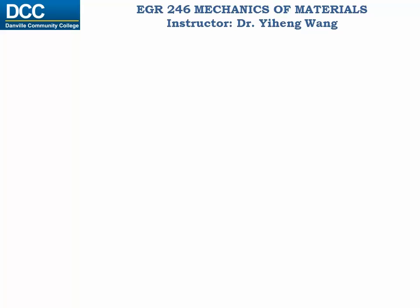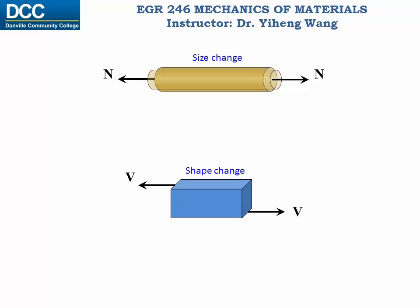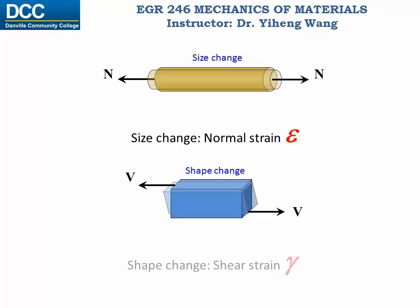As mentioned in the introduction to this course, deformation of a member can be characterized as size change and shape change. Size change is characterized by the parameter normal strain, denoted by the Greek letter epsilon, and shape change is characterized by the parameter shear strain, denoted by the Greek letter gamma.